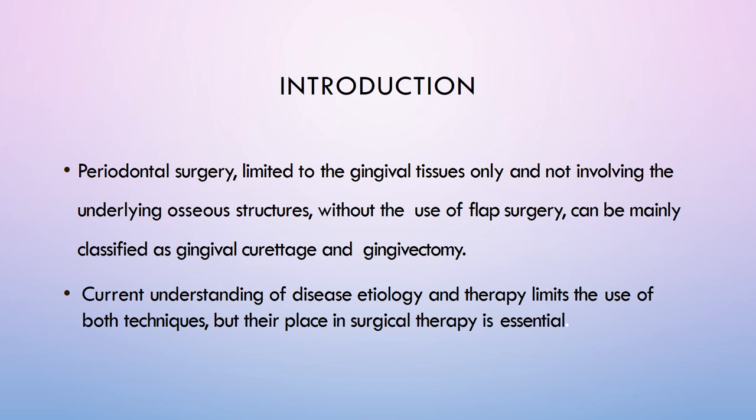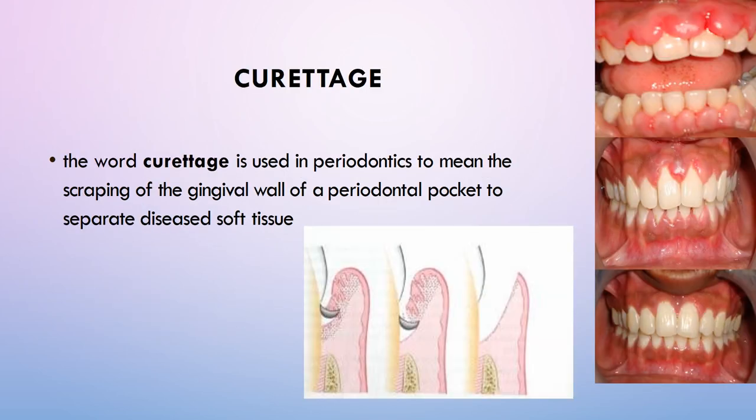The first procedure is curettage. It has been taken out from the periodontal literature as it was used before, but we are going into its details for theoretical purposes. The word curettage means scraping of the gingival wall of a periodontal pocket to separate diseased soft tissue.